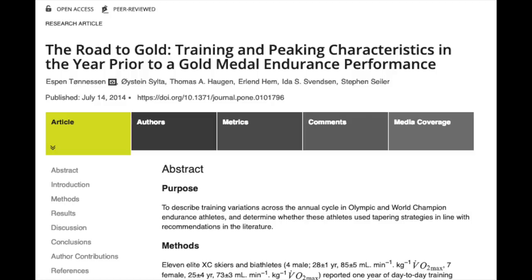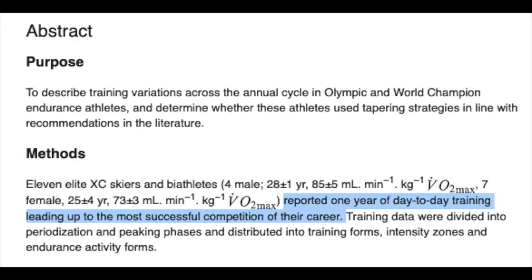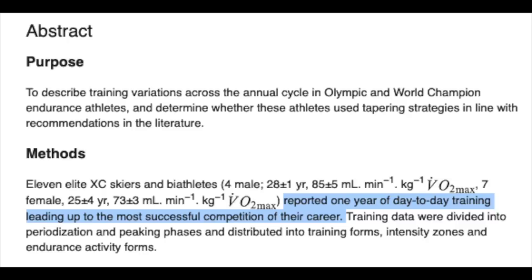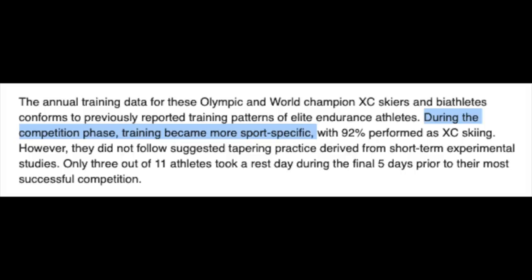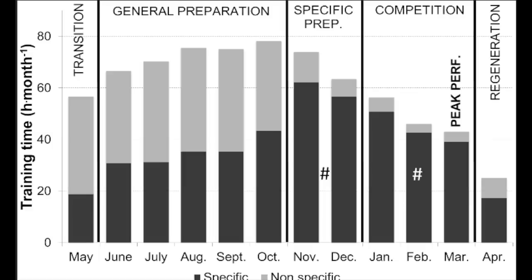This brings me to a study on world champion and Olympic champion cross country skiers. In this study, 11 skiers wrote down their day-to-day training in the year leading up to their most successful competition of their career. They found that training volume and specificity distribution conformed to a traditional periodization model. One might argue that this is evidence against reverse periodization, and I would agree with that. However, I think there's a bigger takeaway from this article: they found that during the competition phase the training became more specific. The volume of specific work increases as they get closer to competition. This right here is what defines periodization. Periodization doesn't necessarily mean moving from high volume to high intensity — it just means that as you get closer to your race your work becomes more specific. And usually for most racing this means higher intensity, although not for all types of racing.